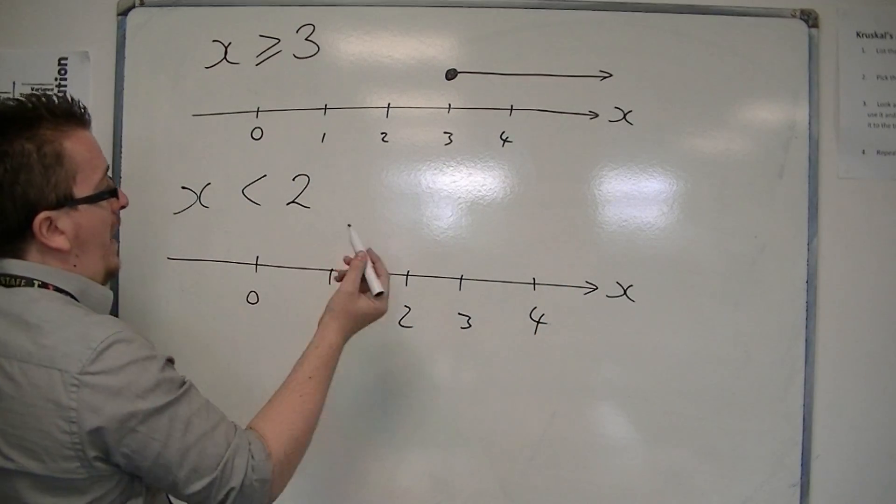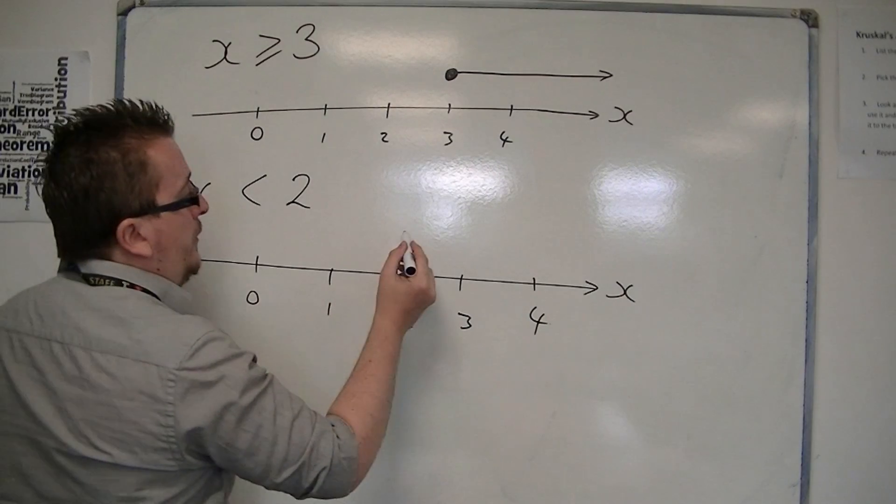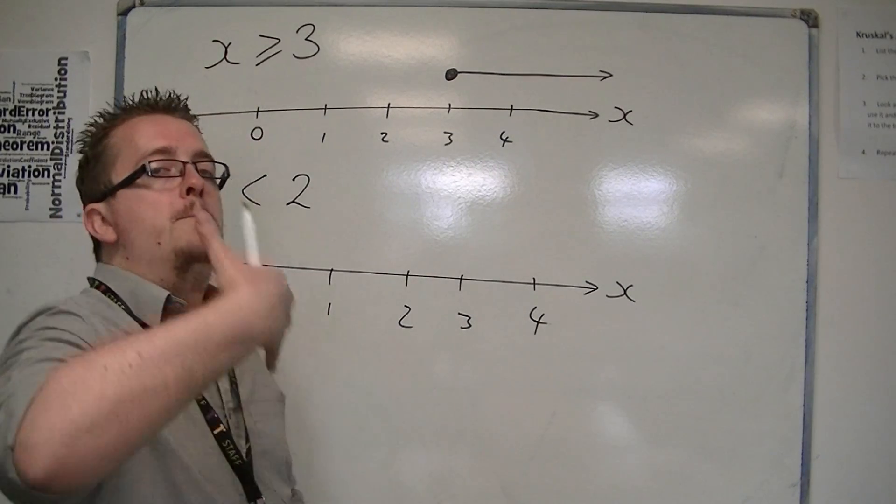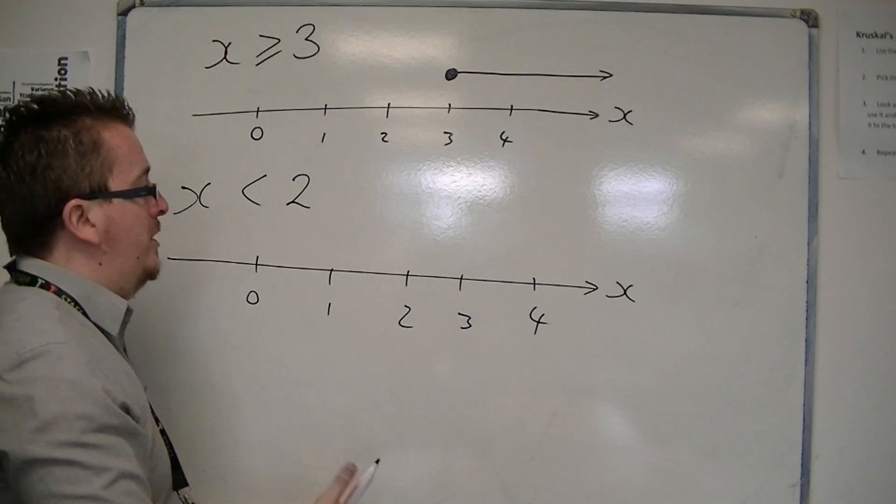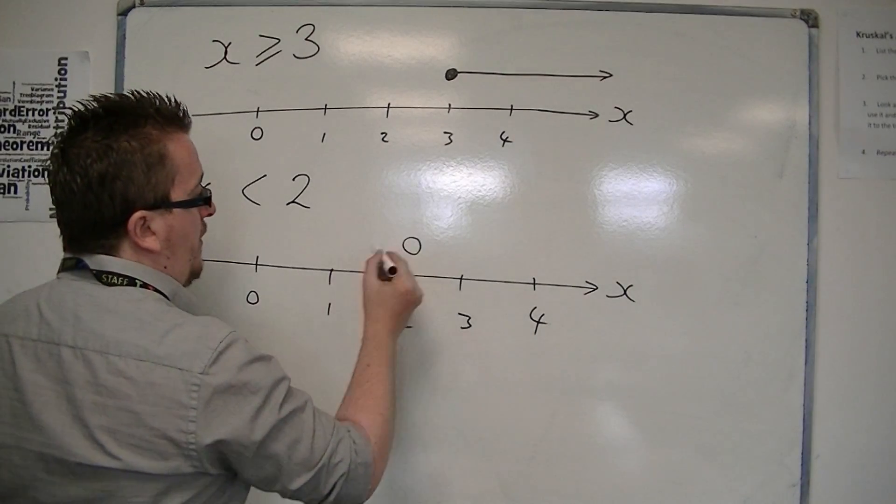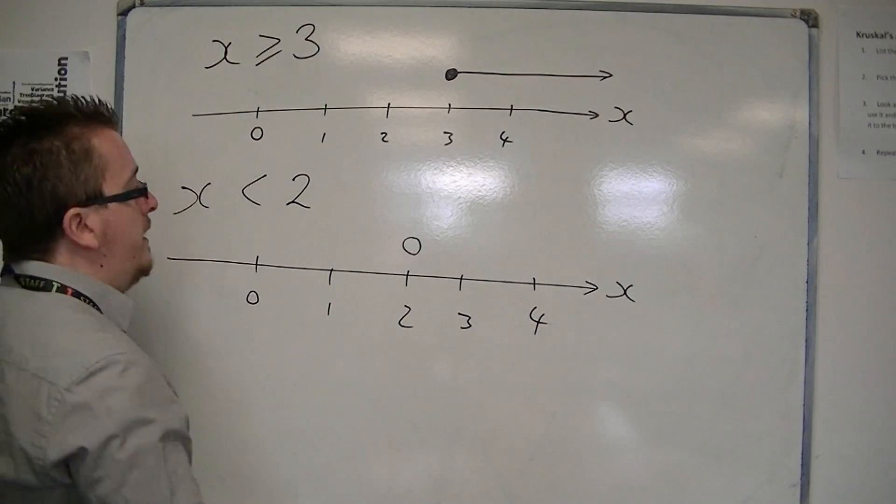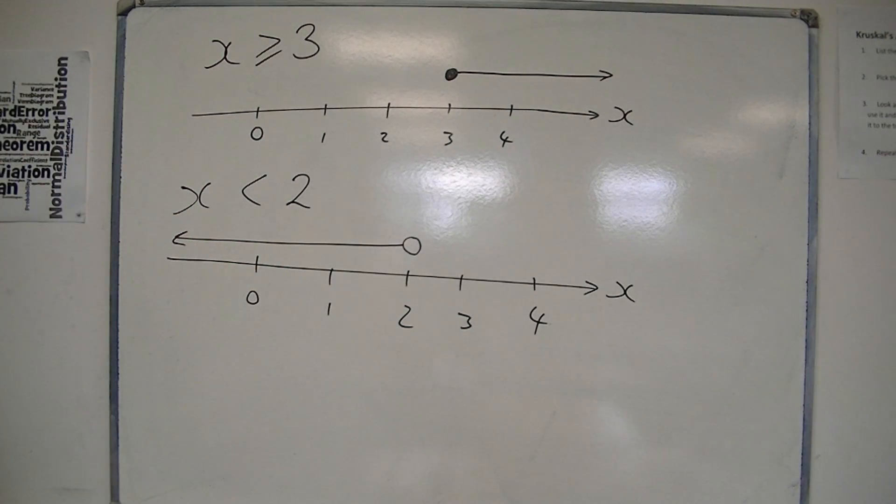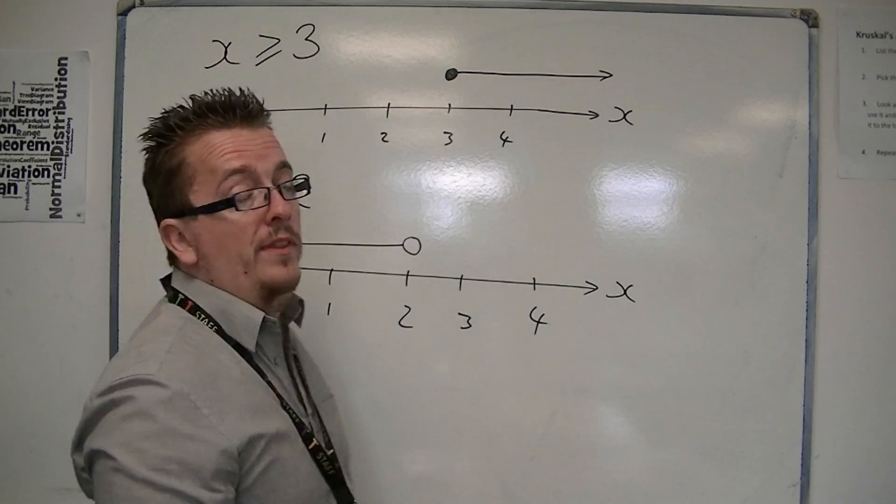And then we could say, well, x is less than 2, so it could be any number up to 2, but not actually 2. And we represent that with a hollow dot, and x can be any value that way.